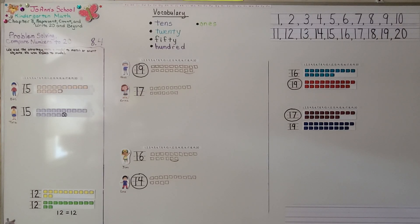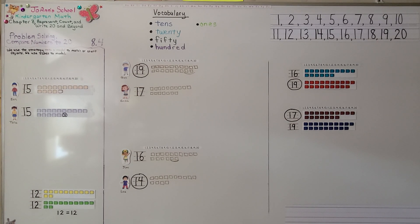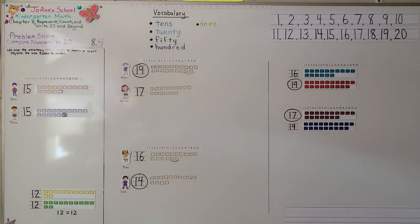So remember: the number that's greater comes after in counting order, and the number that's less comes first in counting order. Our next lesson, 8.5, we're going to count to 50 by ones. I hope you'll join me. I hope you have a great day, and I really wish you'd hit the like button for me.